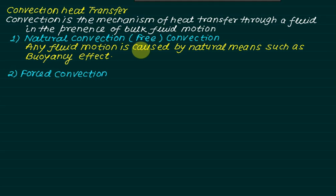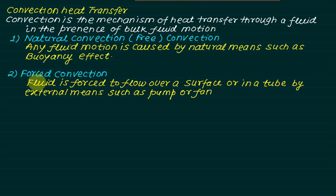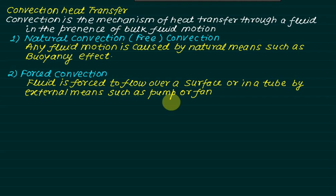In the case of natural or free convection, any fluid motion is caused by natural means such as the buoyancy effect — for example, the rise of warmer fluid and the fall of cooler fluid. In forced convection, the fluid is forced to flow over a surface or in a tube by external means such as a pump or fan. Pumps are used for liquids and fans are used for gases.